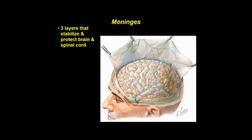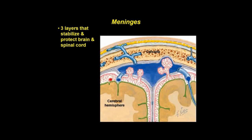Three layers protect the brain and spinal cord: a thick and tough outer dura mater, and the more delicate arachnoid and pia mater. Seen in coronal section, dura attaches to the periosteum of the skull and houses blood vessels, nerves, and lymphatics. Arachnoid mater is a spiderweb-like network of connective tissue, and pia mater adheres to the CNS.